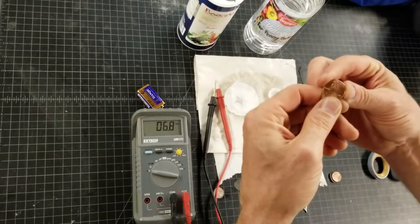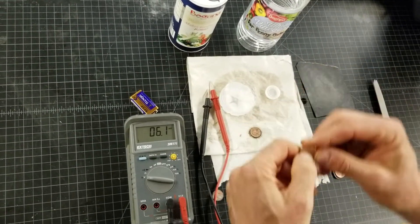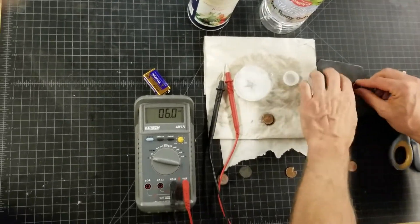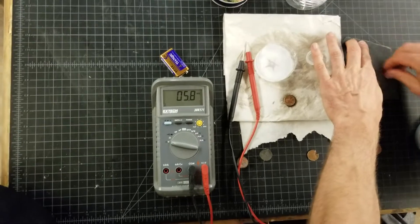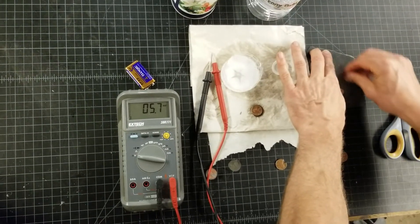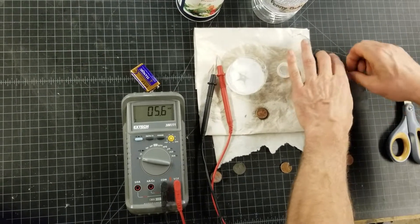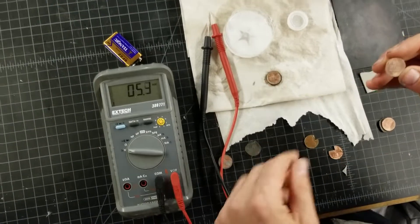You take a penny that's younger than 1982. You take sandpaper and you sand off, literally, just sand off one side. The tail side is the easiest side to do. Once it's sanded off, you'll have all your zinc. I'm just going to show it in the video there.